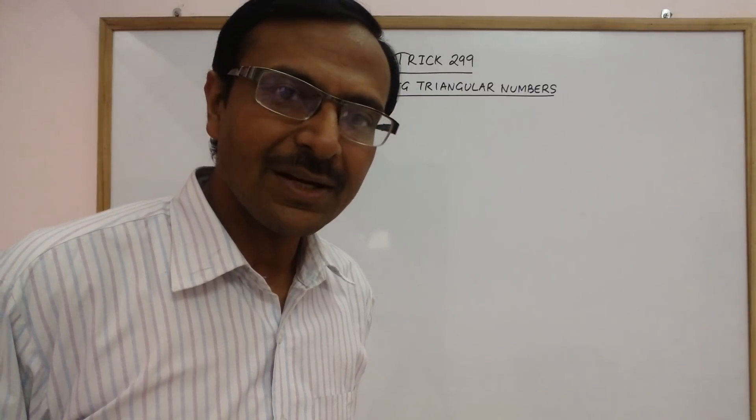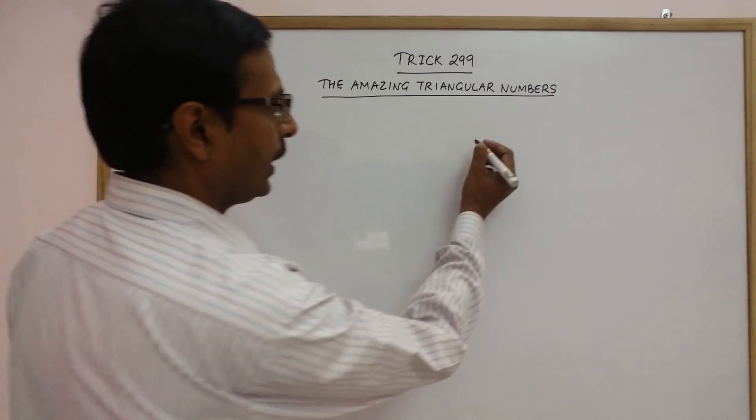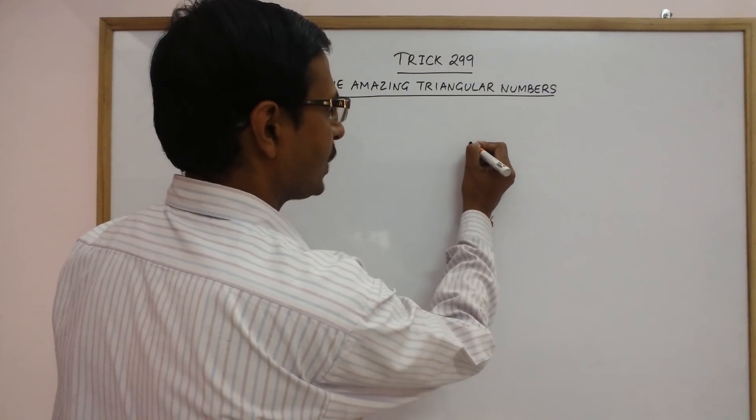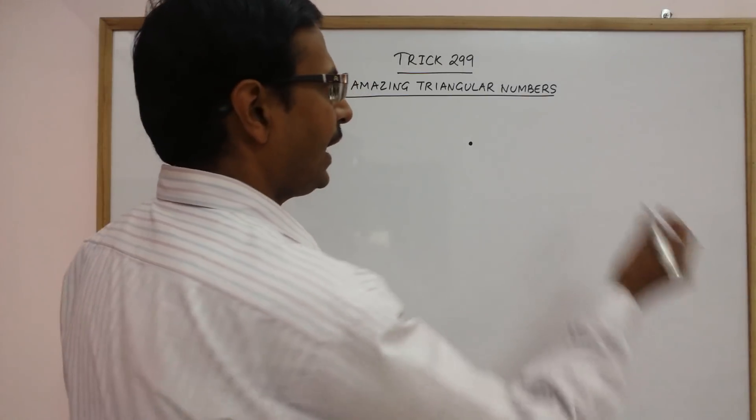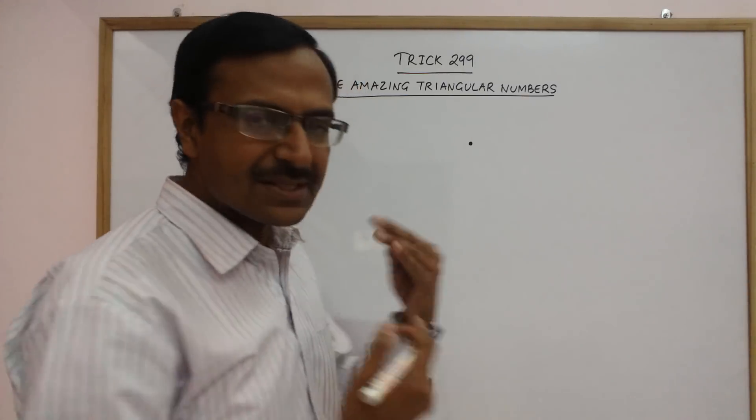Now to understand what are triangular numbers, we will start with the number 1. So, I represent the number 1 by a dot and for getting the next triangular number,